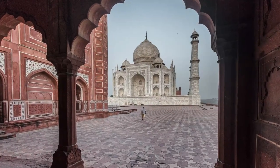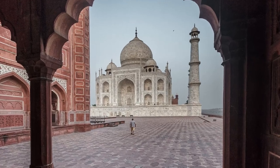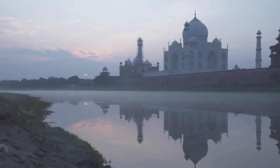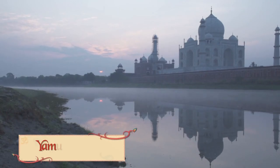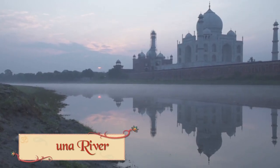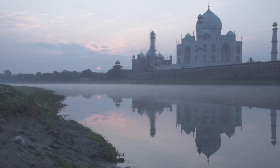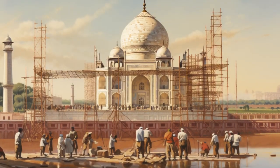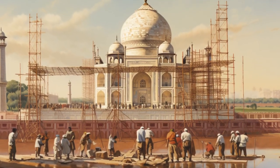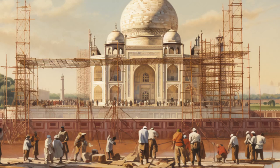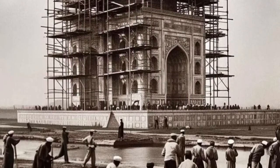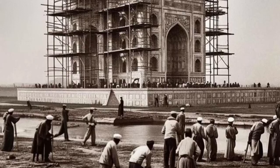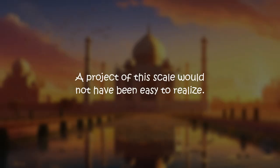The architects did come across a few challenges during construction. One environmental challenge was the impact of the nearby Yamuna River, whose floods and changing course could have affected the stability of the structure. Another problem was labor, as the project needed a massive and diverse workforce to complete, all of whom faced harsh working conditions such as long hours and exposure to harsh weather. A project of this scale would not have been easy to realize.